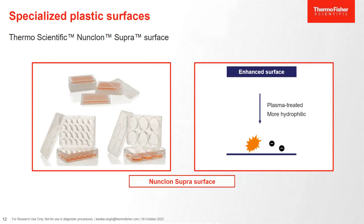To cater to this requirement, Thermo Fisher offers a specialized surface called Nunclon Supra surface. This surface is a high attachment surface which is plasma treated, which allows and supports the growth of MSCs in the absence of any ECM coating. We can use serum-free and xeno-free media for growing our cells. I'll take you through a set of experiments we did in order to showcase the usage of Nunclon Supra surface for culturing different MSCs.